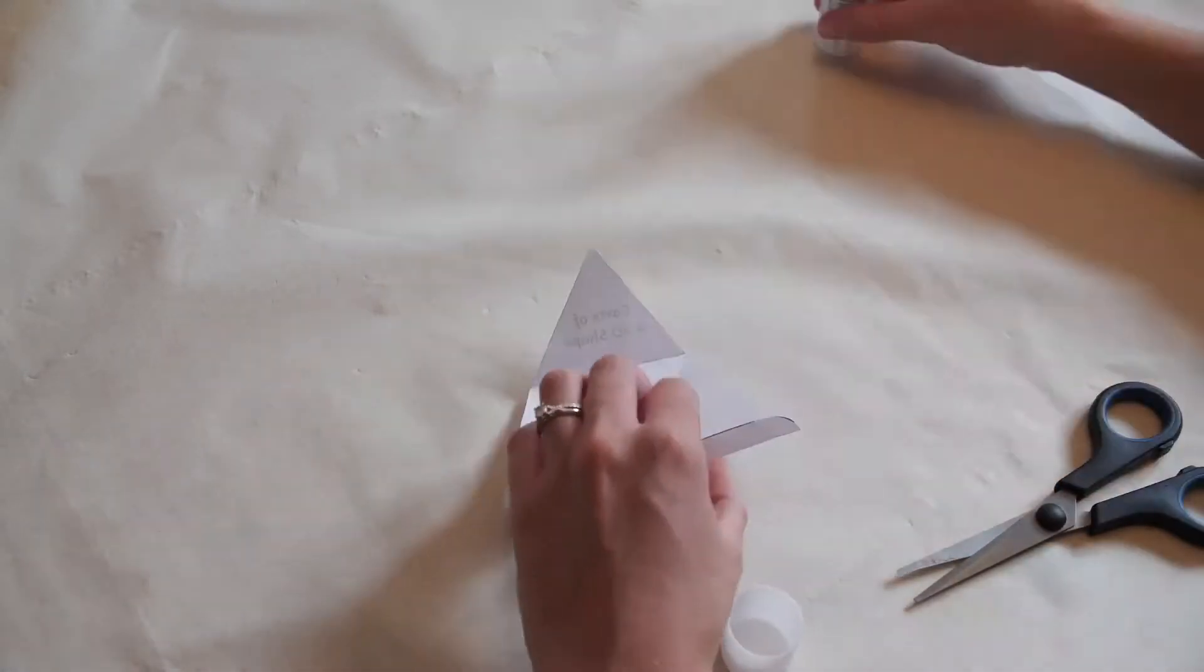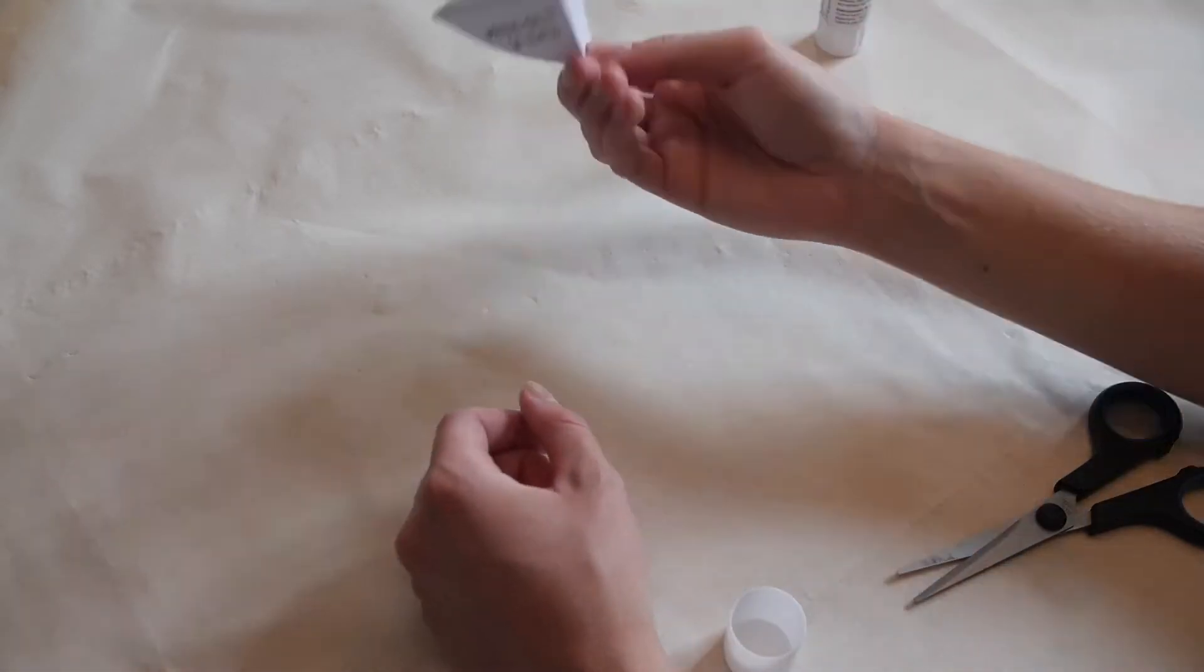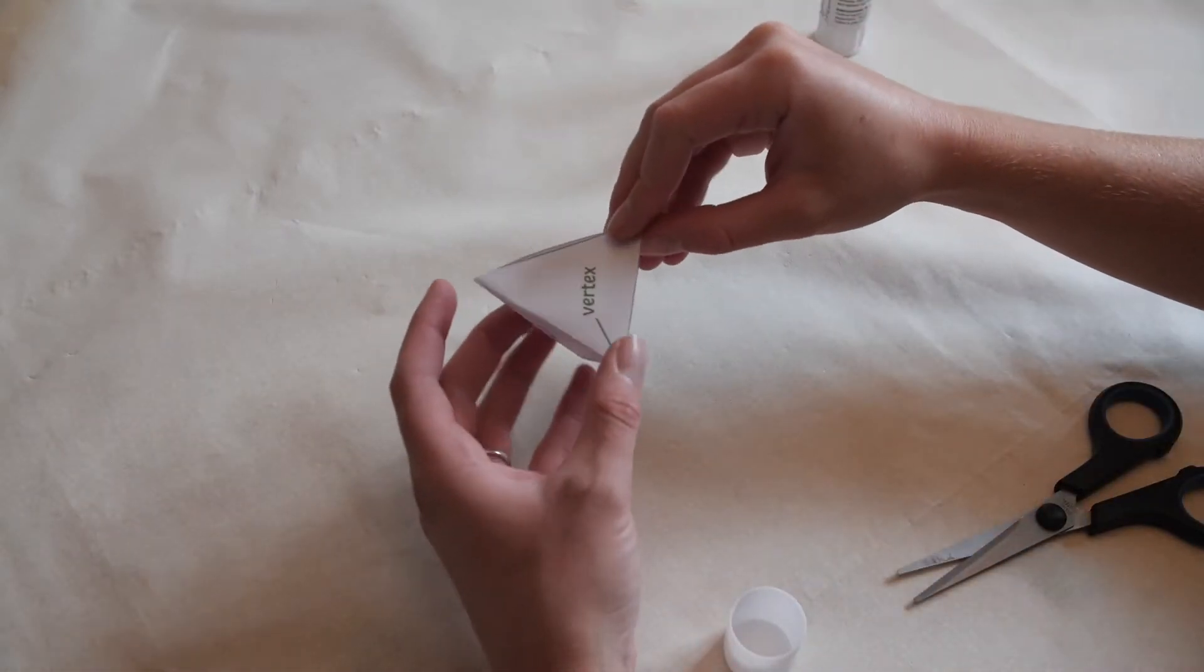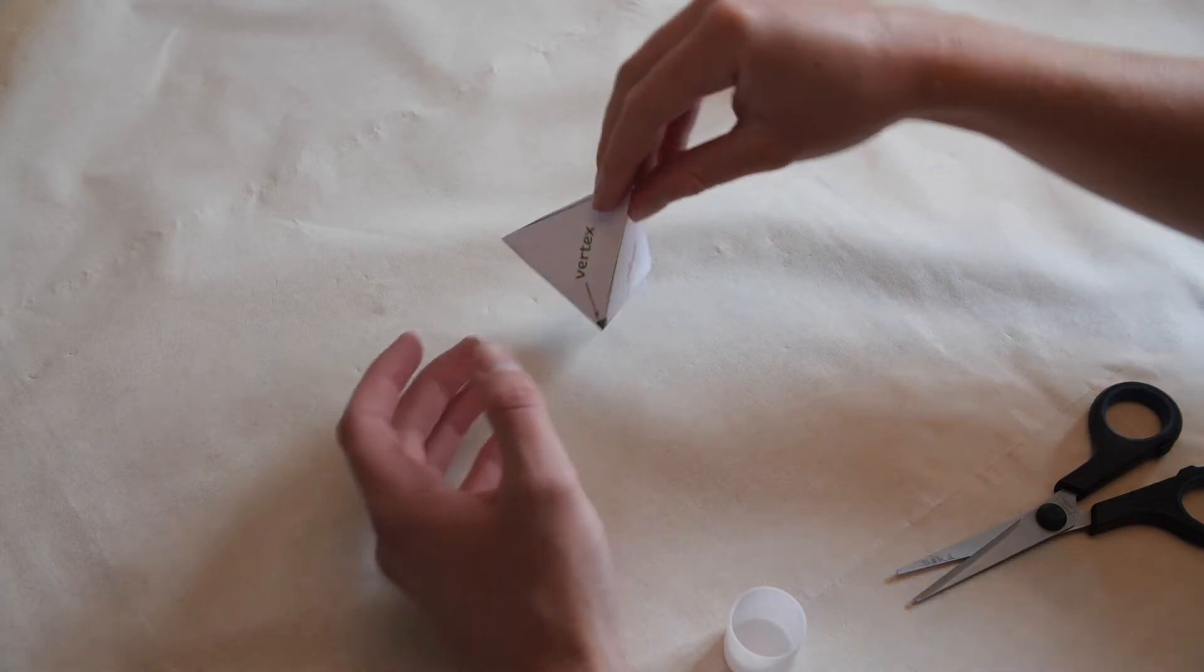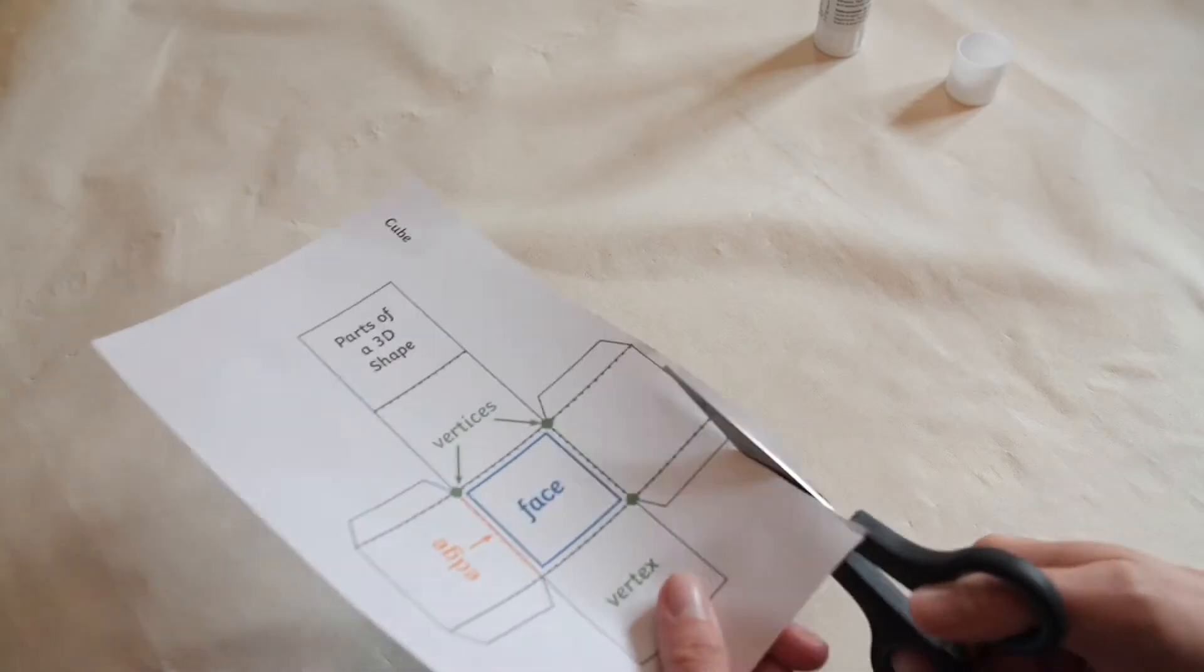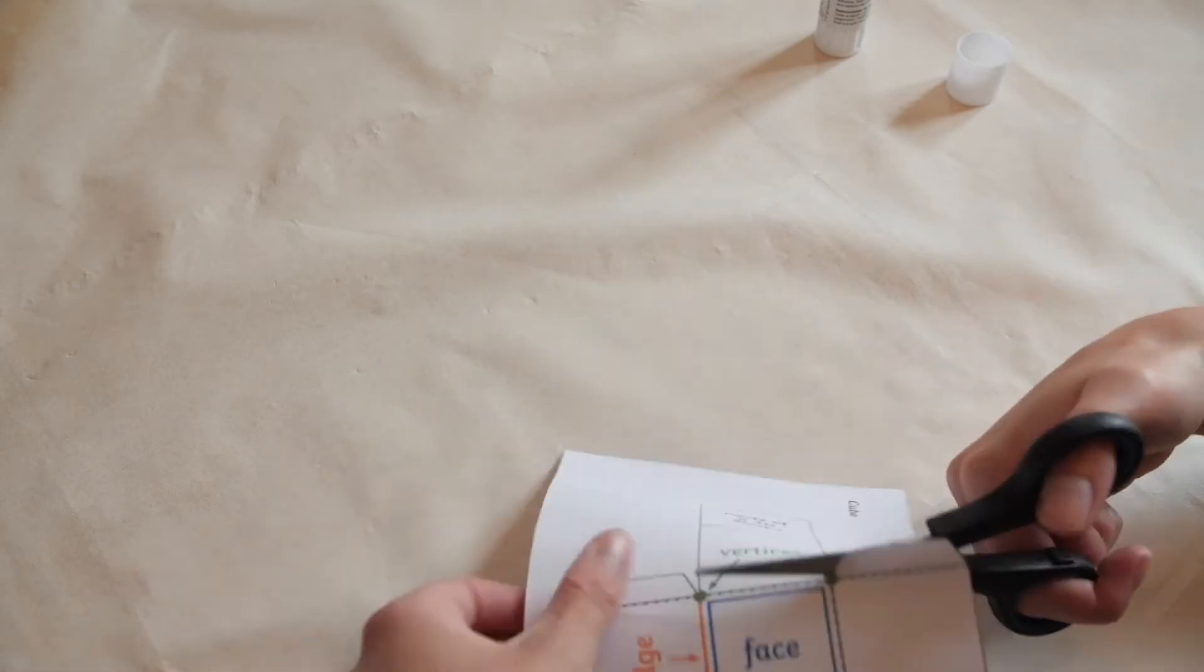Put a dab of glue onto the tab and fold together. Children will now be able to see the edges, faces, and vertices of a shape as they are labeled. There are some other shapes included in the pack, such